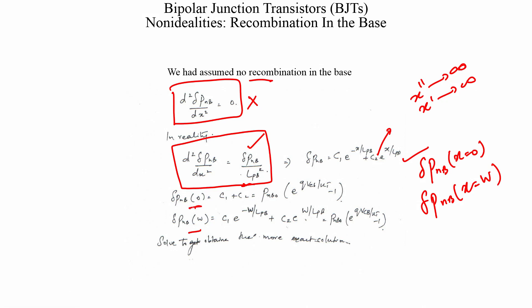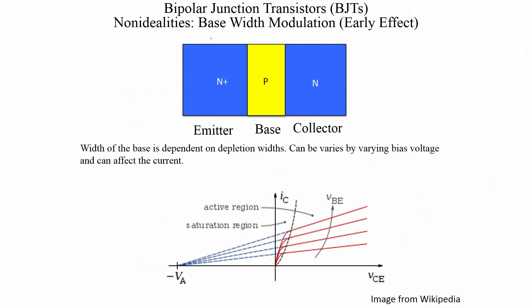The key difference here is that unlike the collector and emitter regions, we cannot eliminate one coefficient by sending x to infinity. We need two boundary conditions: delta_p_B at x=0, which depends on the emitter-to-base voltage, and delta_p_B at x=W, which depends on the collector-to-base voltage. Since the collector-base junction is reverse biased, that term will be very small — going below the equilibrium value.